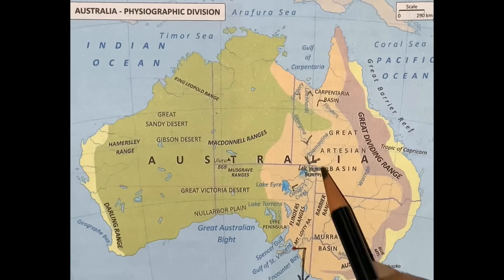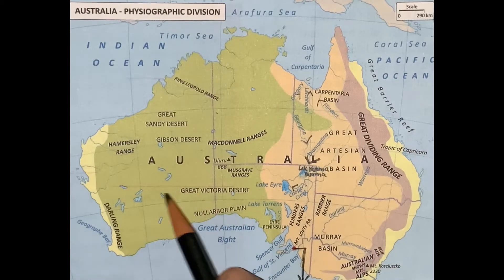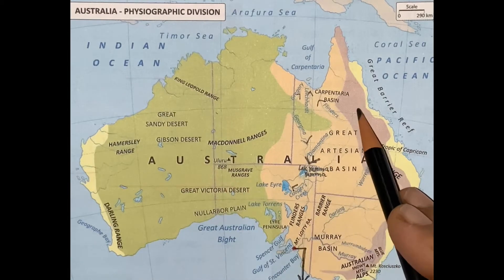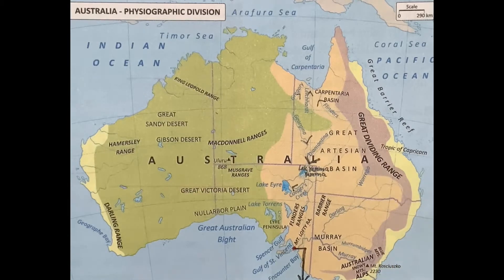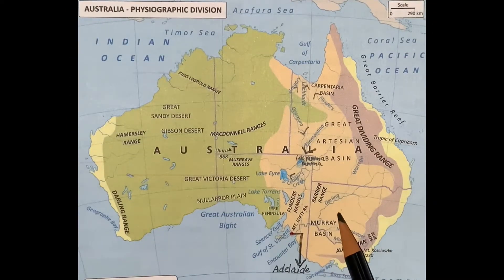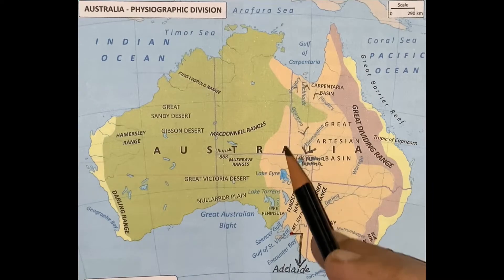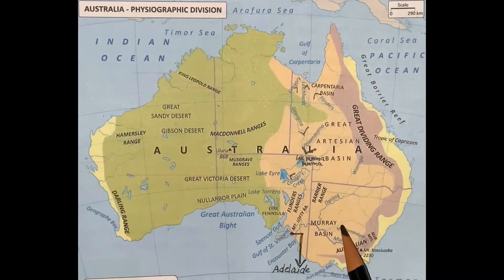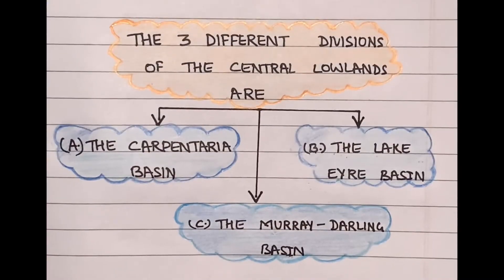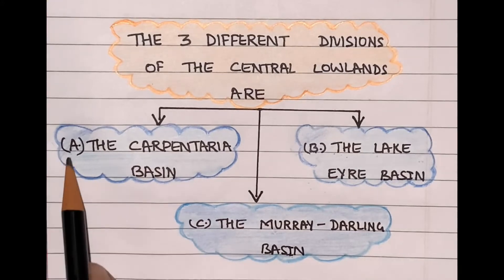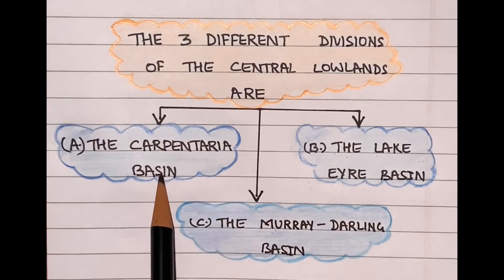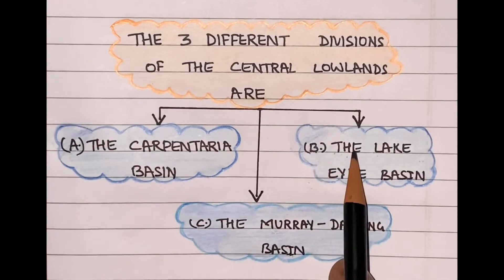Let's explore the second physical division of Australia, that is the Central Lowlands. It is a low-lying region between the western plateaus and the eastern highlands. This region is shown with the help of light orange color in the given map. The Central Lowlands are further divided into three lowlands: A) the Carpentaria Basin, B) the Lake Eyre Basin, and C) the Murray-Darling Basin.